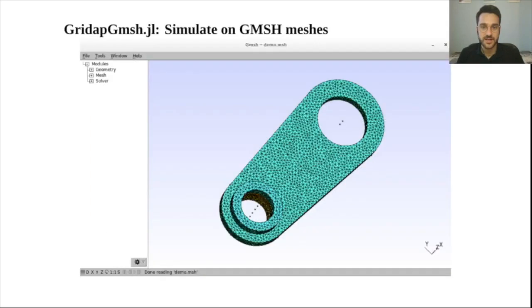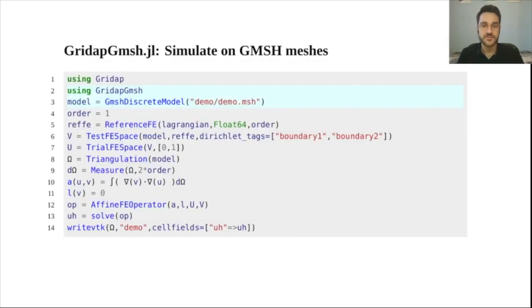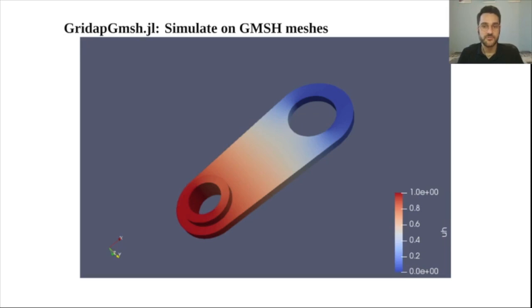GridApp Gmesh lets you import into GridApp a mesh generated by Gmesh, a well-known open source finite element mesh generator. Usage in GridApp is very straightforward. You just need to convert the Gmesh into a native GridApp model. From here, all GridApp functionality is available for you. And here is the solution of the previous example.